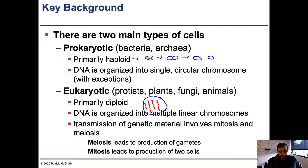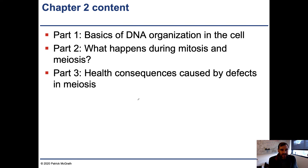Transmission of genetic material involves two different types of processes: mitosis and meiosis. Mitosis is used to produce two new identical cells — during development, as a fertilized egg becomes a whole organism, each cell has essentially exactly the same complement of DNA because mitosis separates DNA equally between the two cells. Meiosis is used to produce gametes — sperm and egg used for reproduction — and this process is not conservative, so it does not lead to identical DNA contents between cells. Throughout this lecture we'll cover: the basics of how DNA is organized in the cell, what happens during mitosis and meiosis, and the health consequences caused by defects that can occur during meiosis.